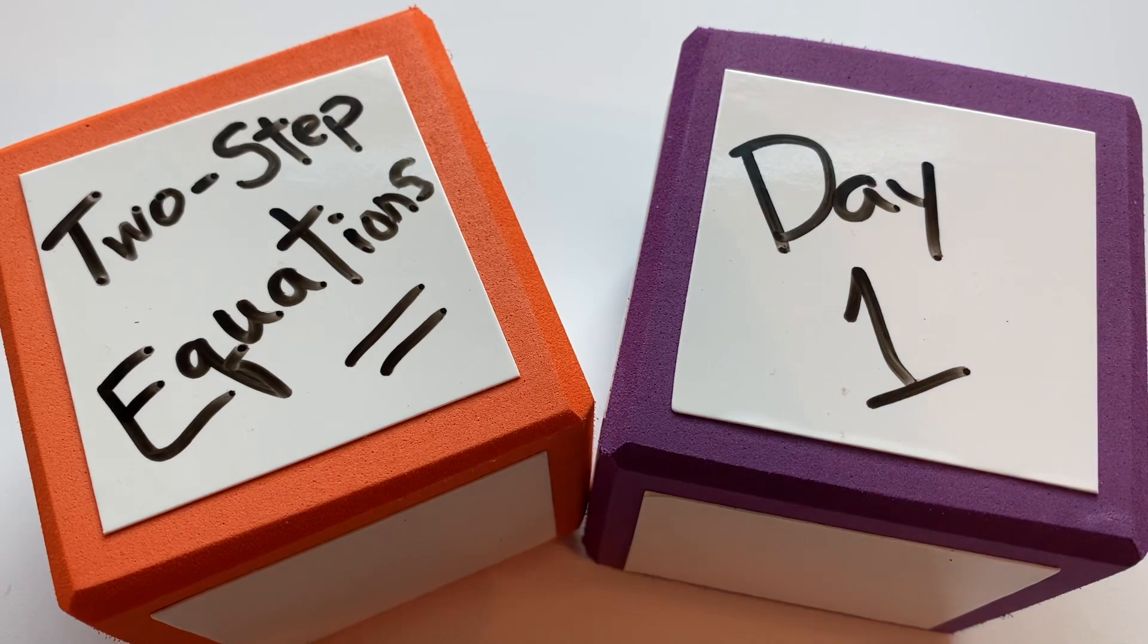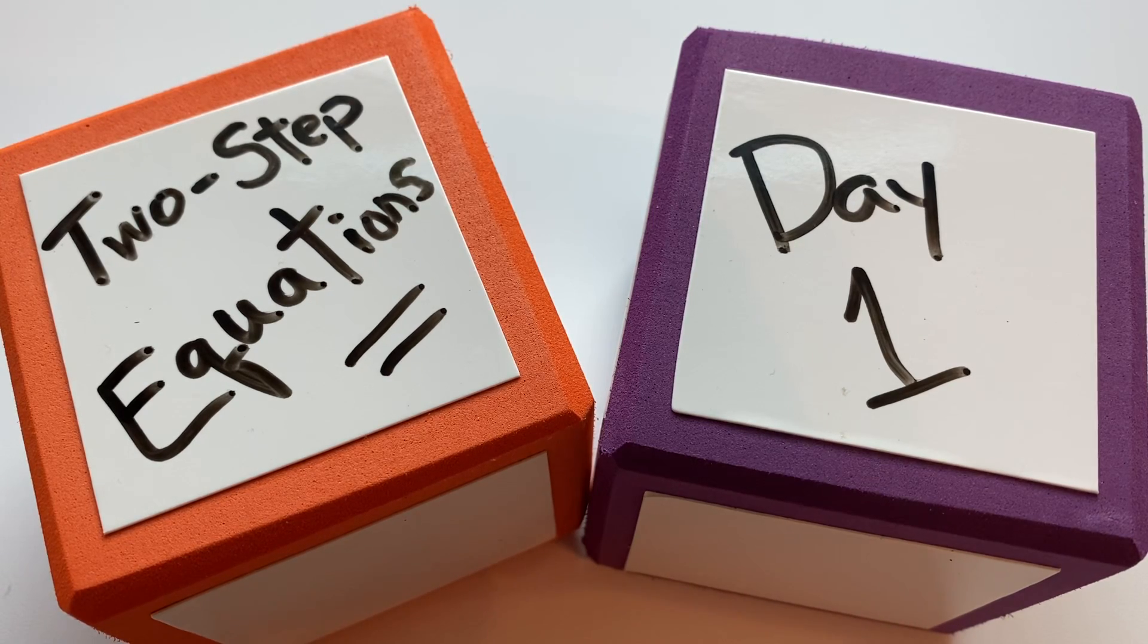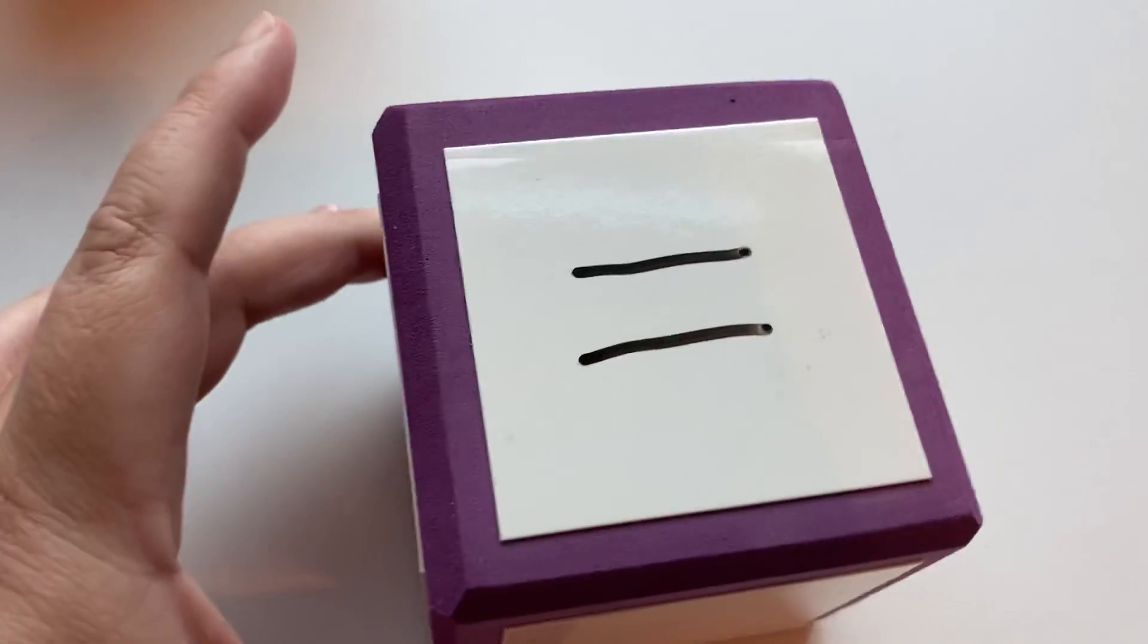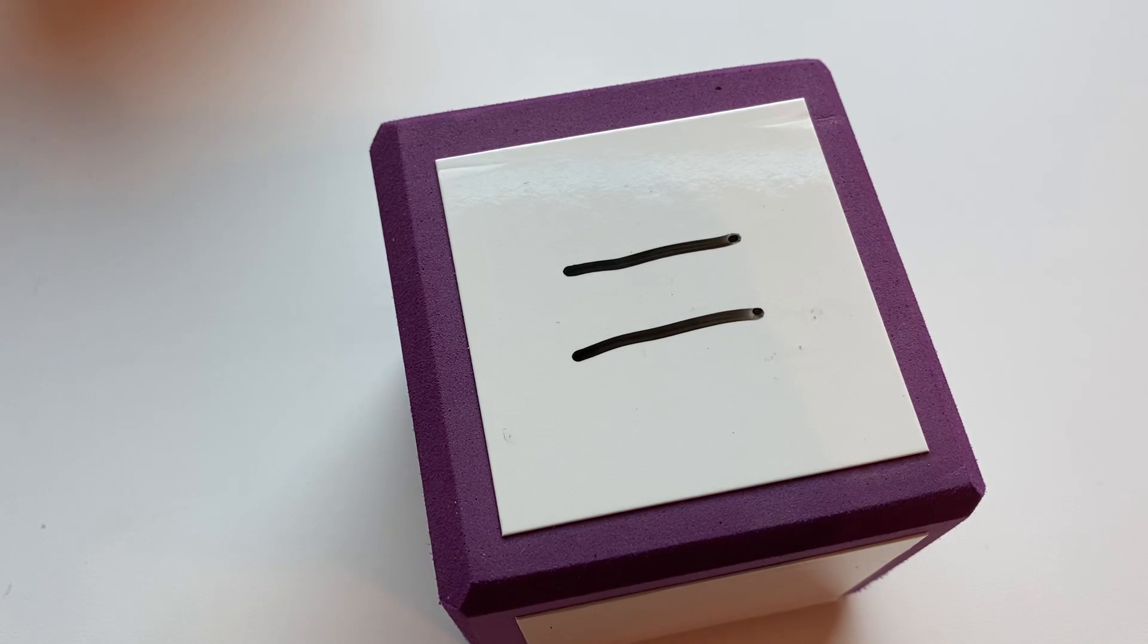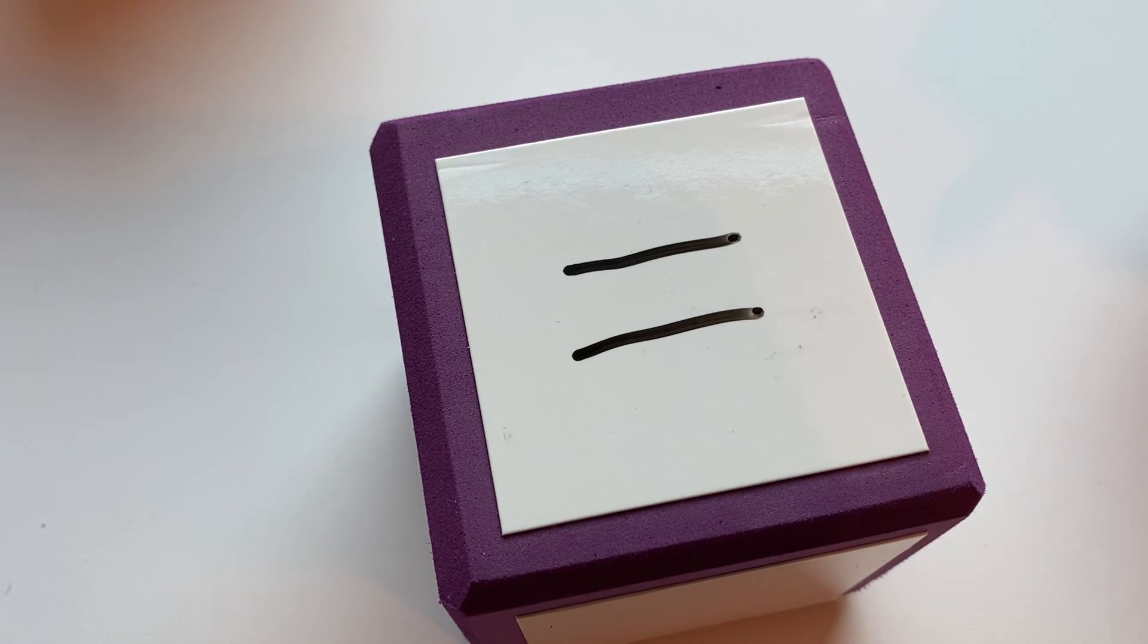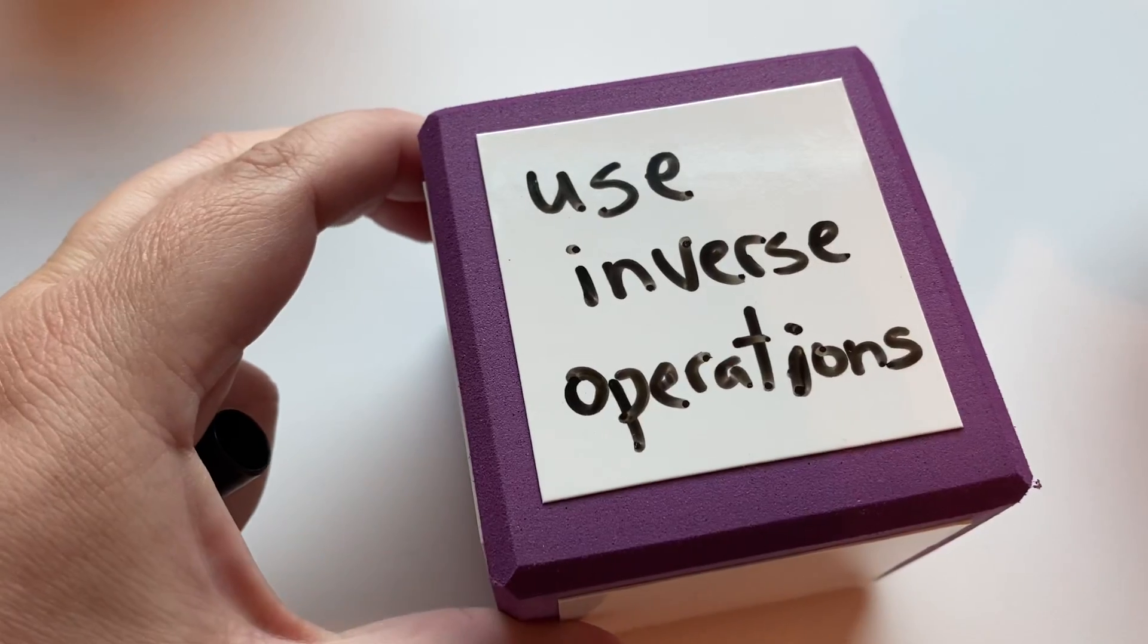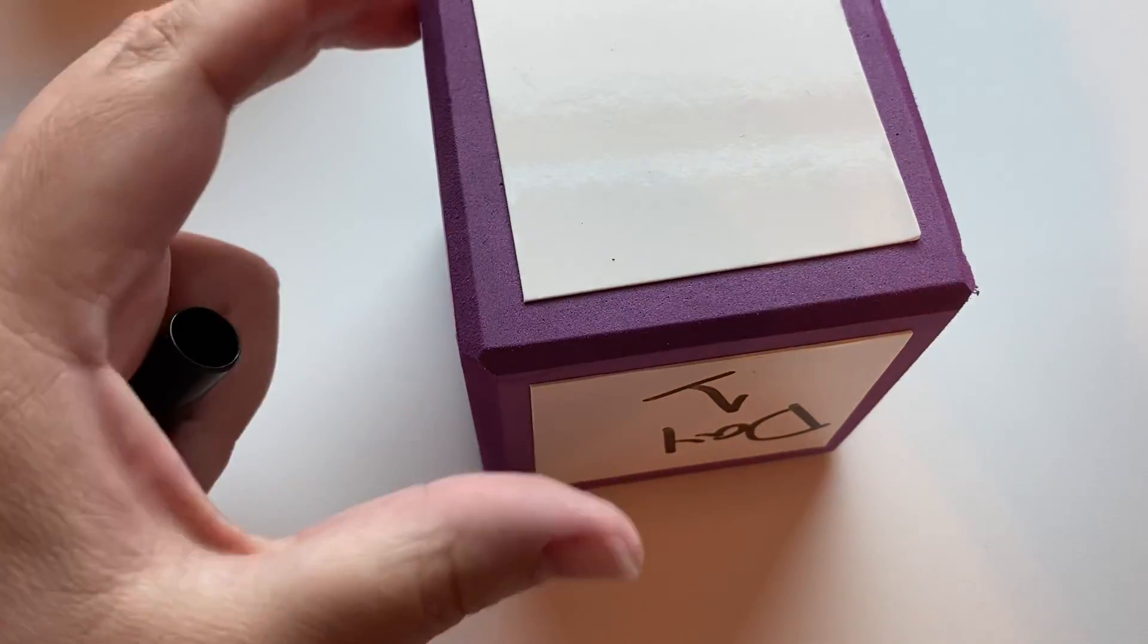Hi, welcome to day one of two-step equations practice. We're going to talk about equations a little bit to refresh our memories. Equations are number sentences that have equal signs, and the two sides of the equal sign are equal—they have the same value. In an equation, we're usually solving for a variable. Sometimes the variable could be different letters like x or y.